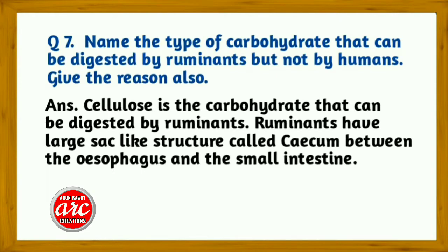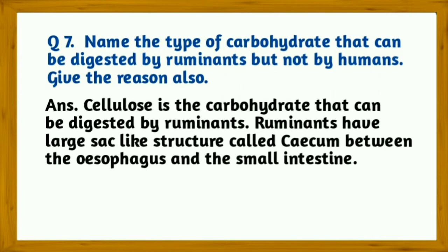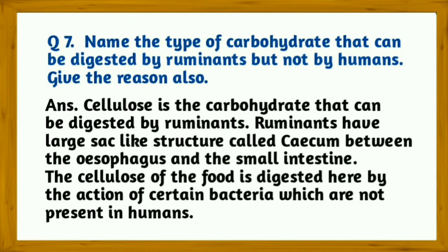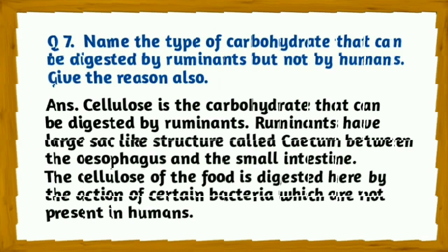Question 7: Name the type of carbohydrate that can be digested by ruminants but not by humans. Give the reason. Answer: Cellulose is the carbohydrate that can be digested by ruminants. Ruminants have a large sac-like structure called the rumen between the esophagus and the small intestine. Cellulose is digested here by the action of certain bacteria, which are not present in humans.